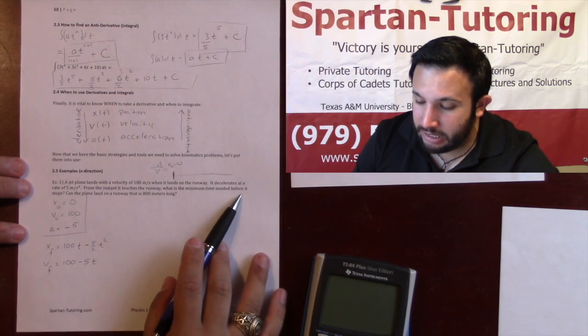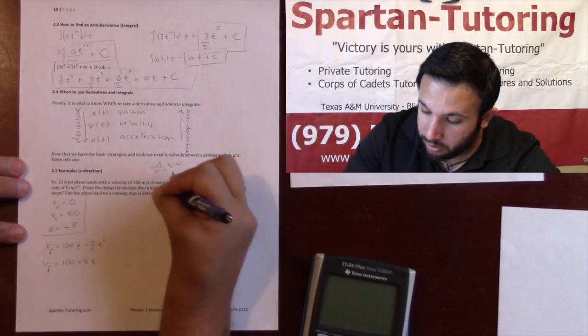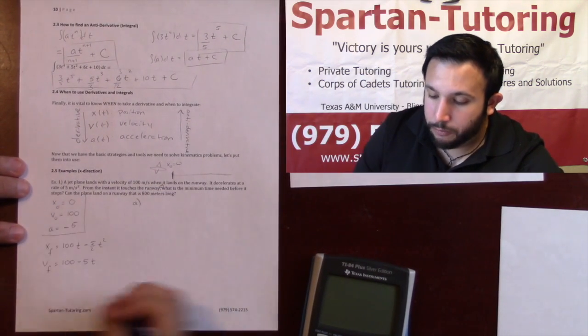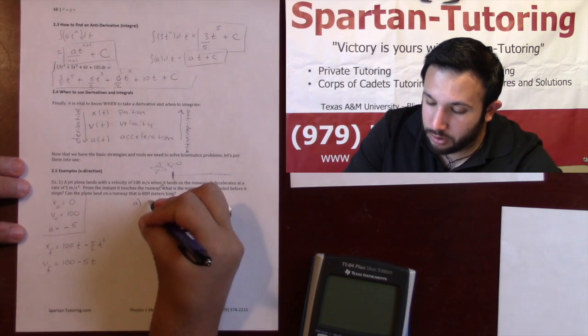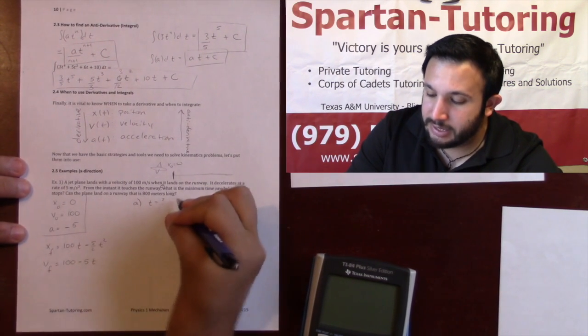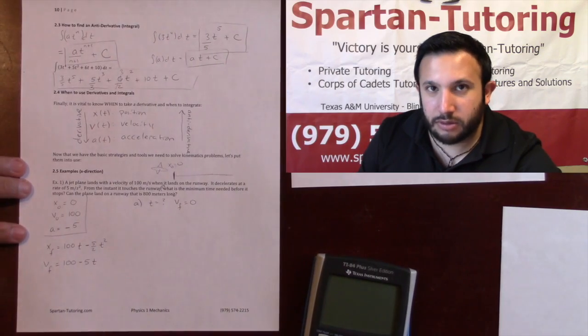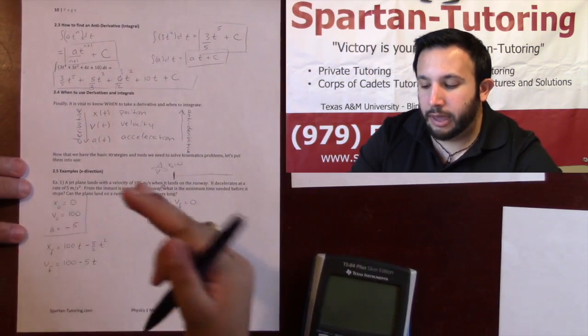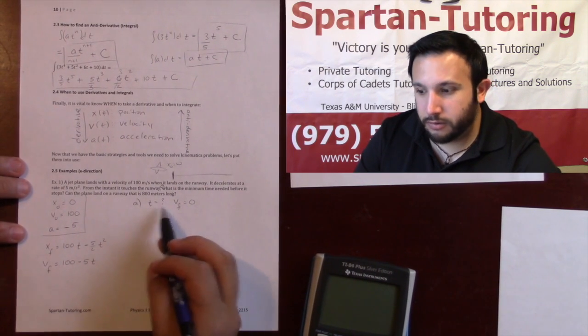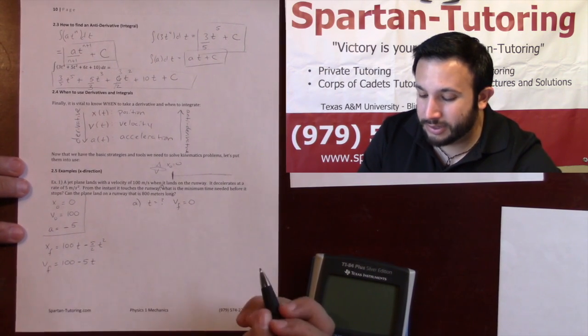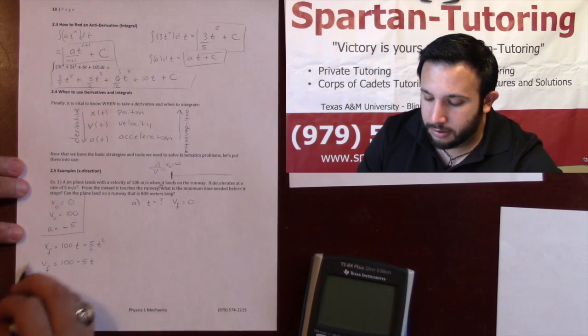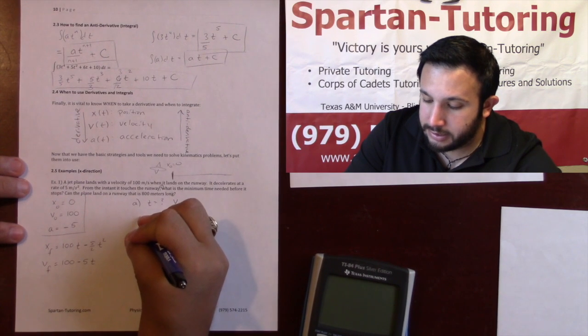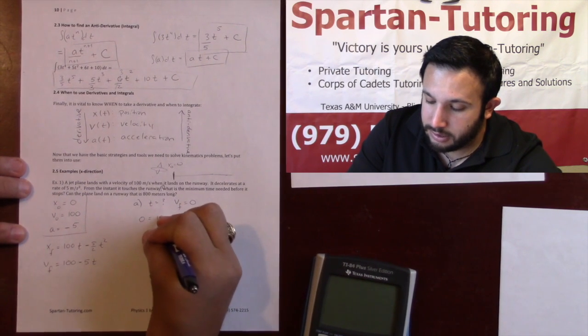It says what is the minimum time needed before it stops. We'll call this part A. For part A, what I need is I'm looking for the time that it takes for the velocity to equal zero. That's what I meant previously by reading and understanding the question. The time is what I'm looking for, and that's when velocity is equal to zero.